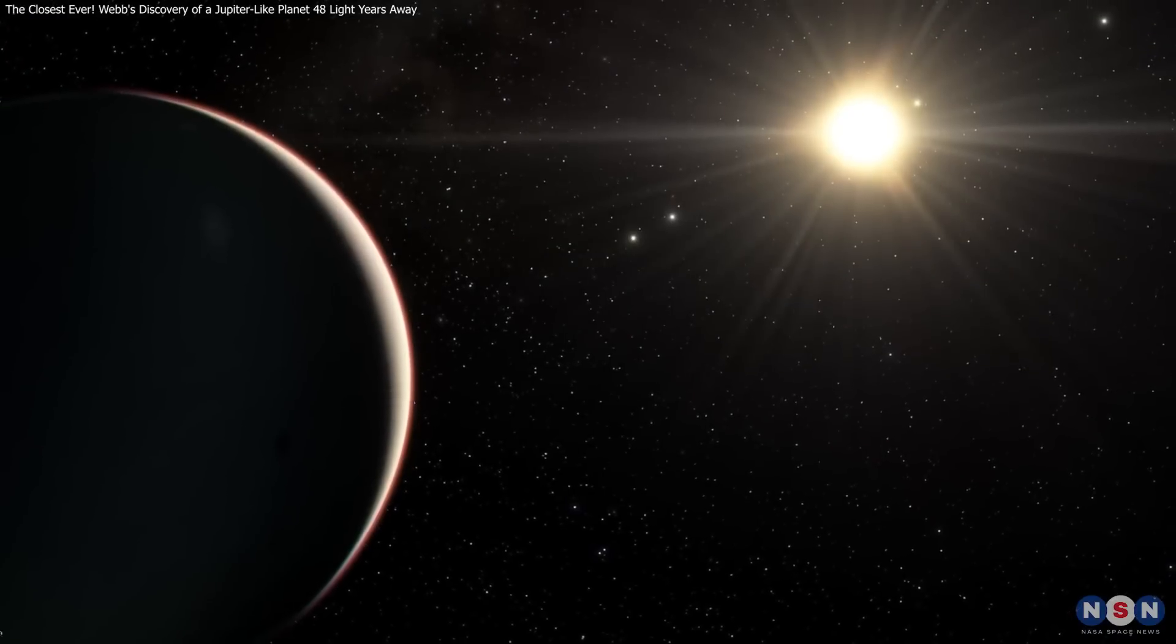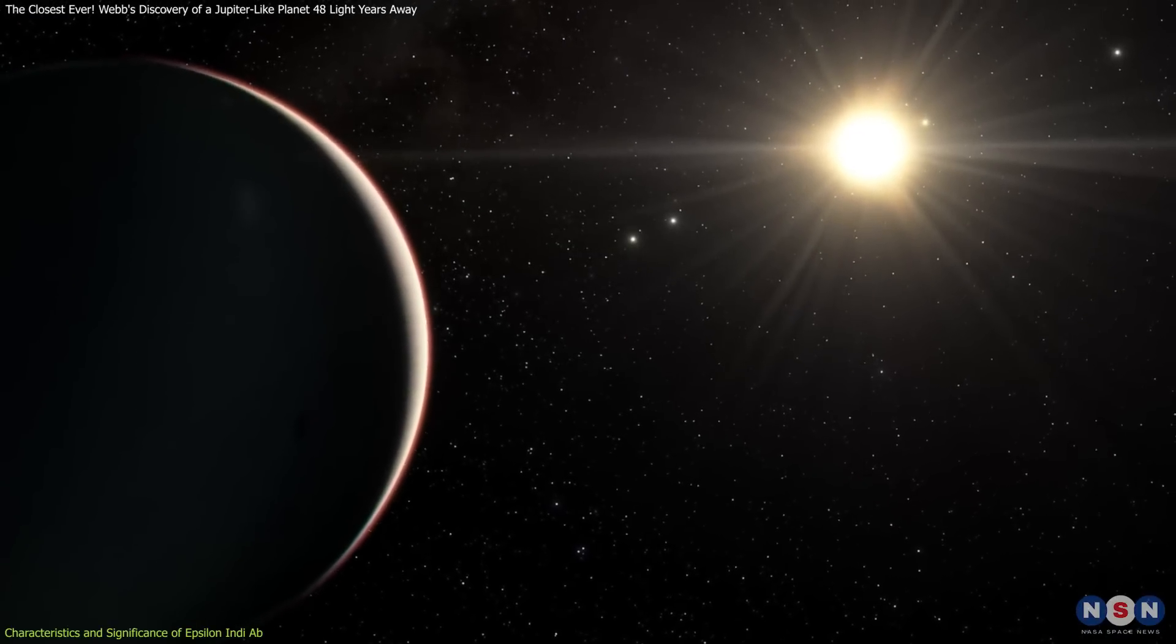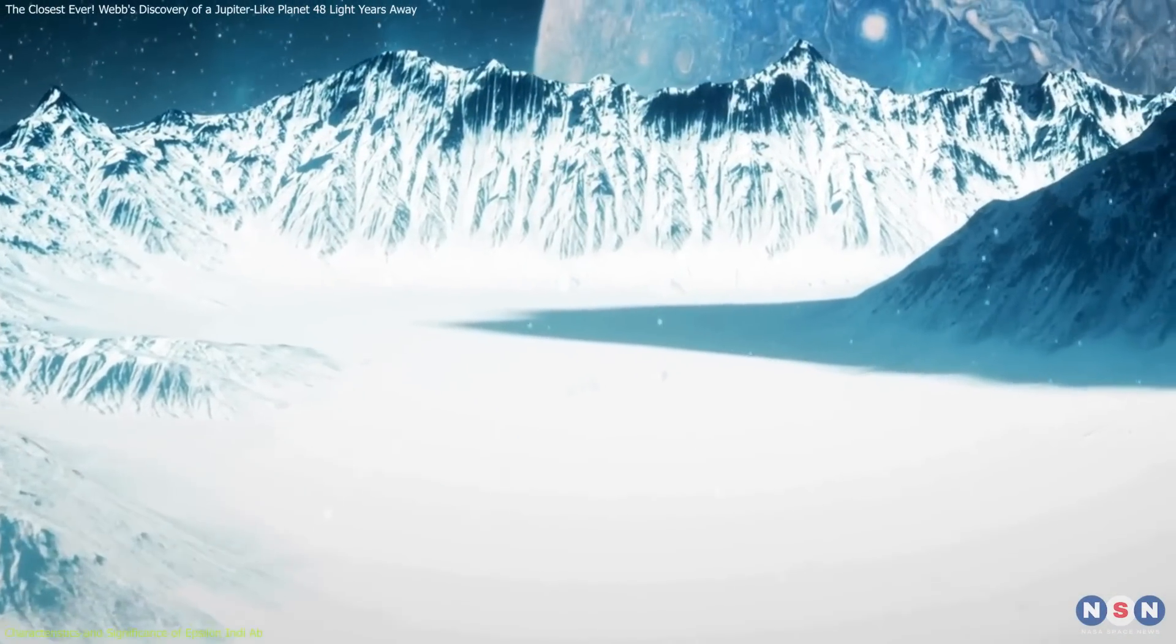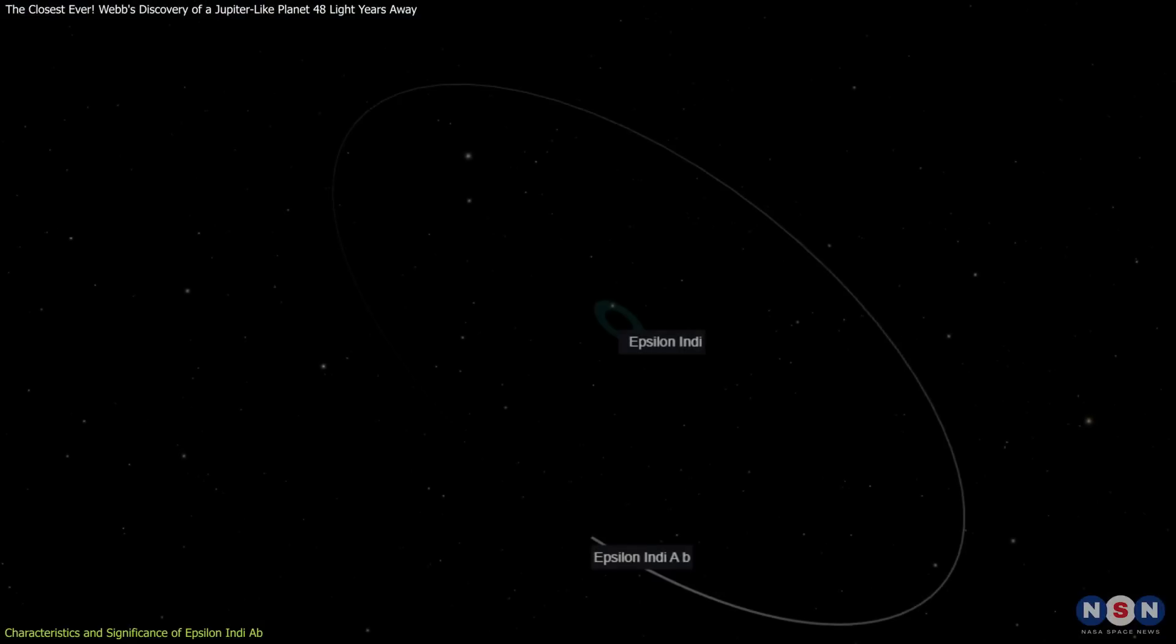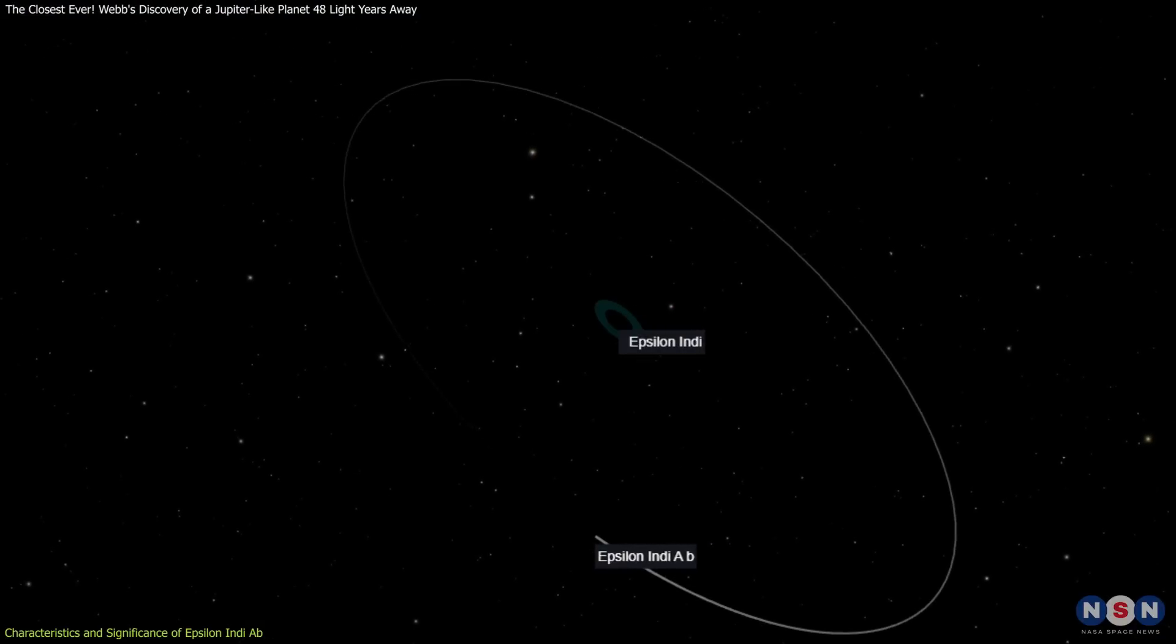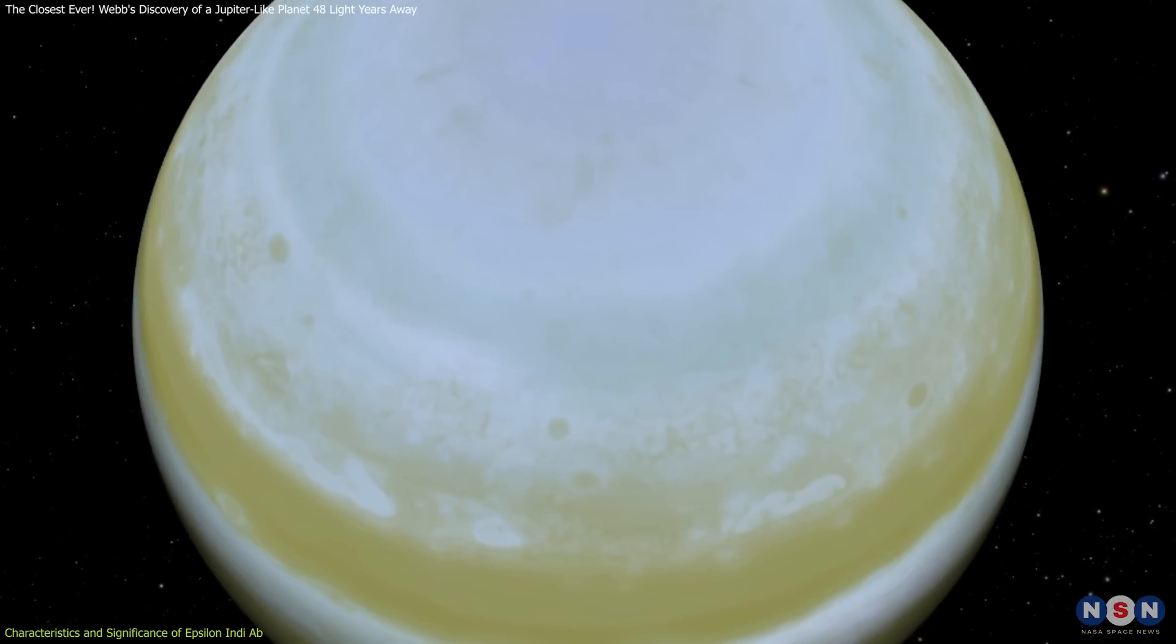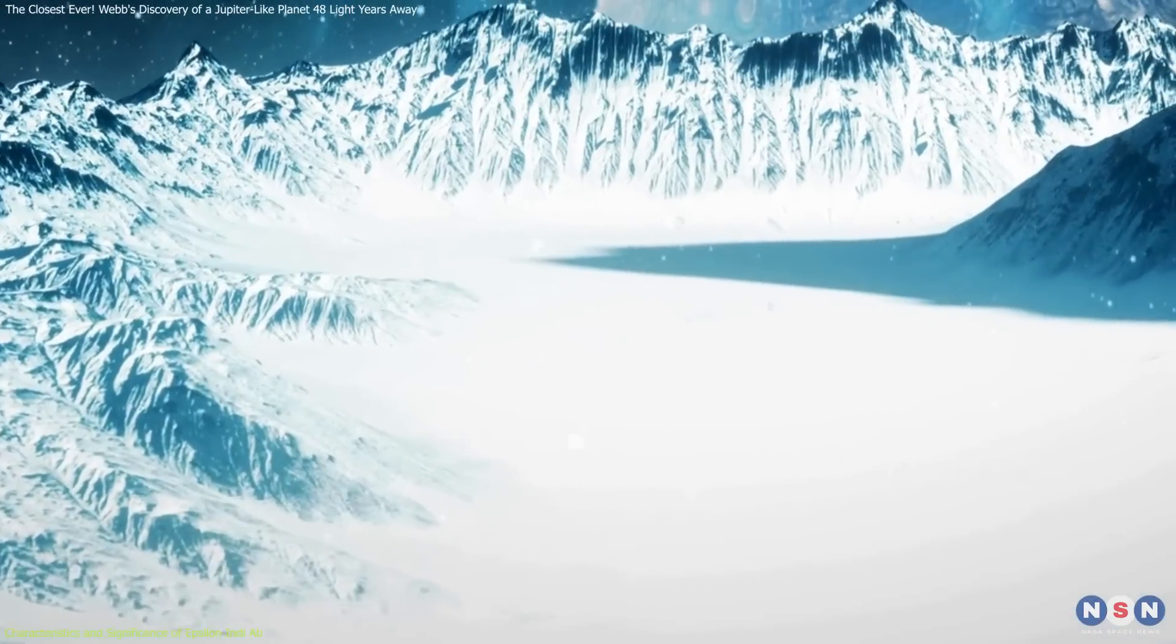Epsilon Indi Ab is a super-Jupiter with a mass about six times that of Jupiter, a chilling surface temperature of approximately zero degrees Celsius, and an orbit ranging from 20 to 40 astronomical units from its host star. Its significant size and mass, combined with its extreme temperature,